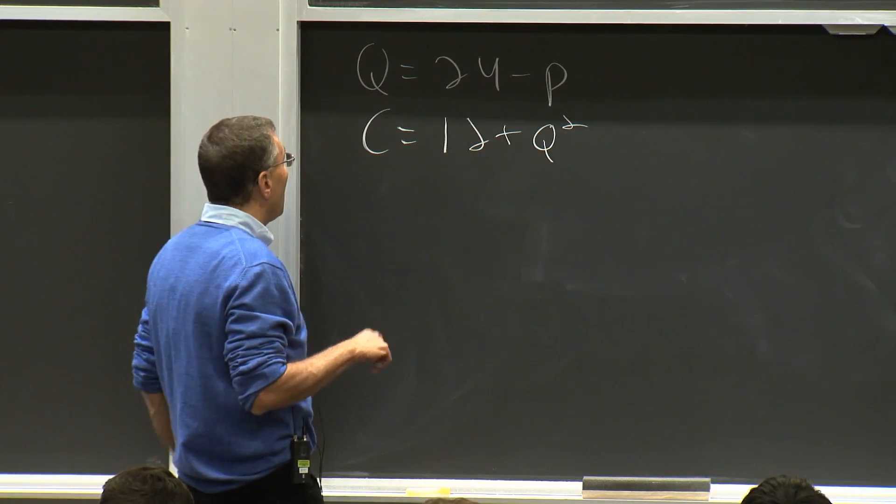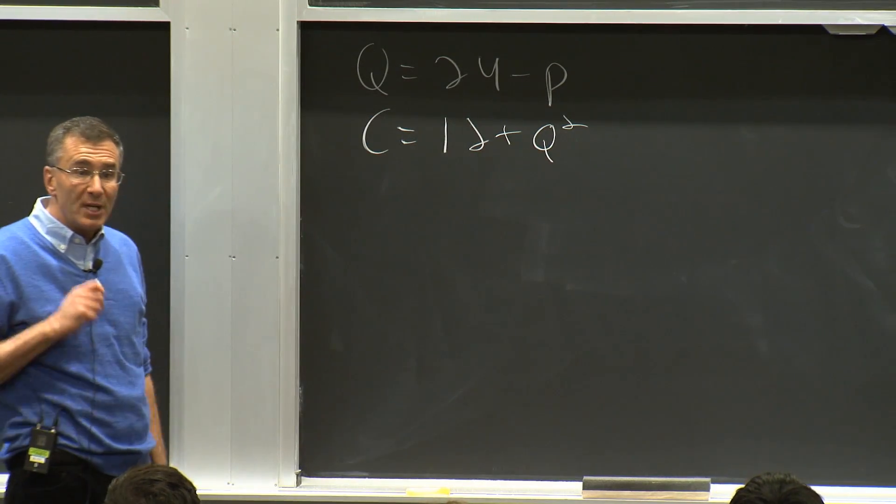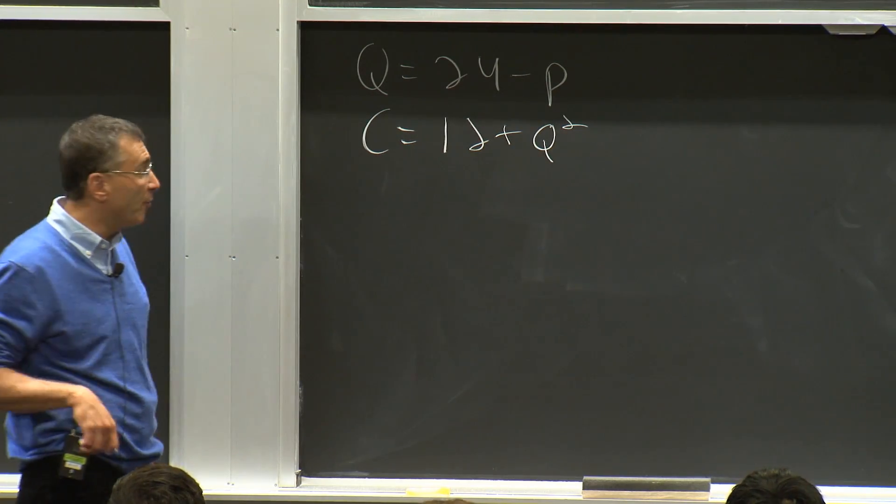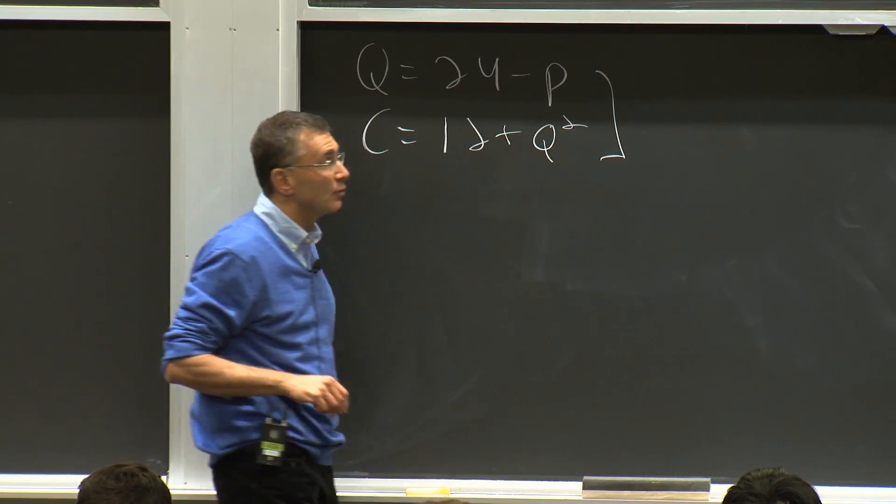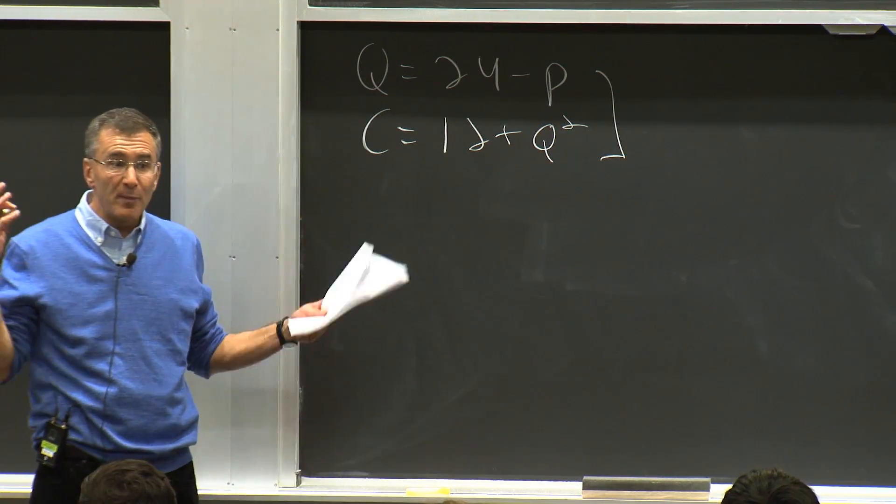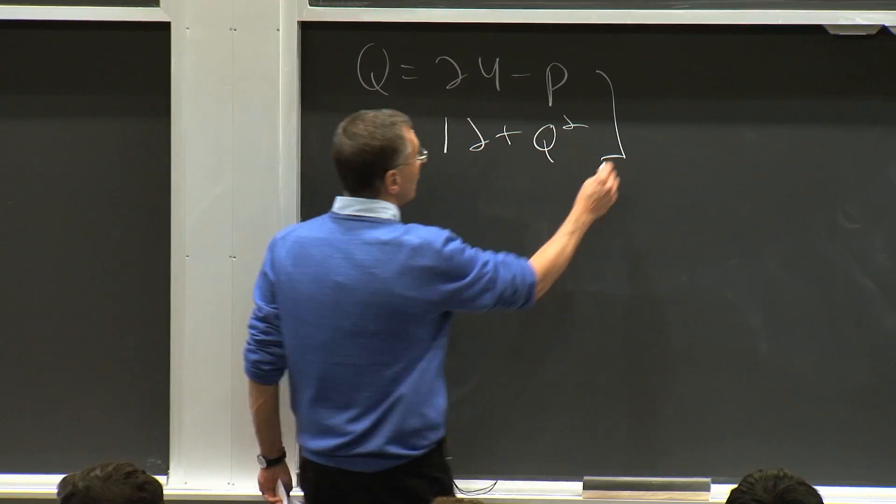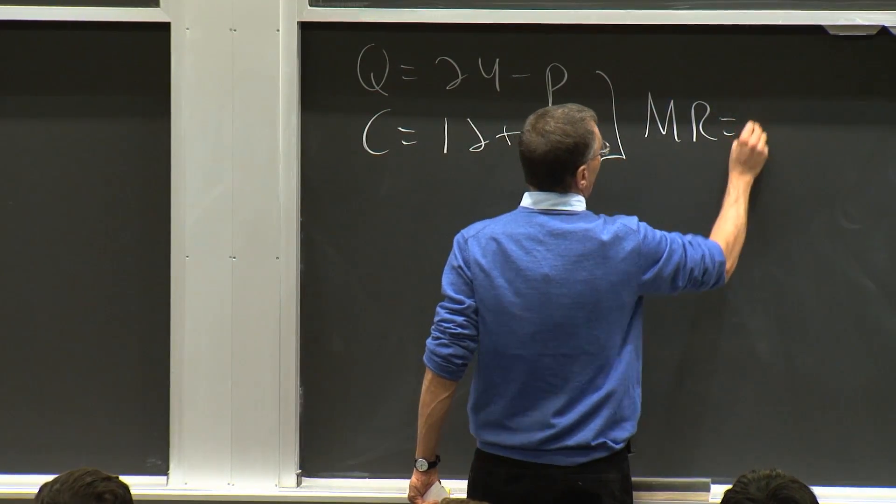Now, recall, armed with these two, you can tell me what the profit maximizing quantity is. How can we solve for the profit maximizing quantity? What rule are we going to use? What's our fundamental rule of profit maximization? Marginal revenue equals marginal cost. So we're going to set marginal revenue equal to marginal cost.